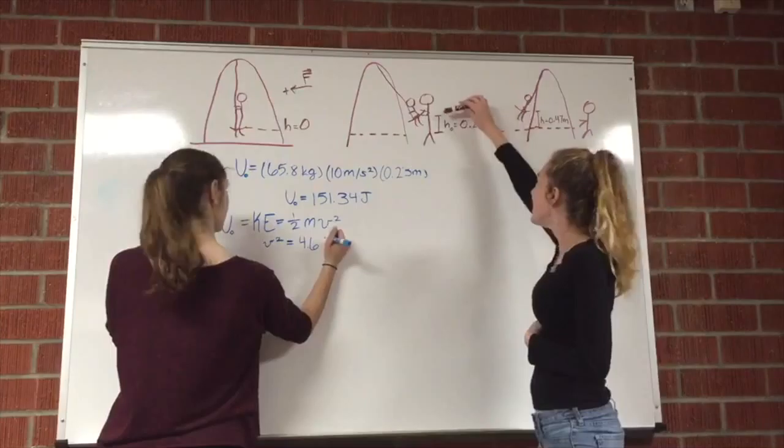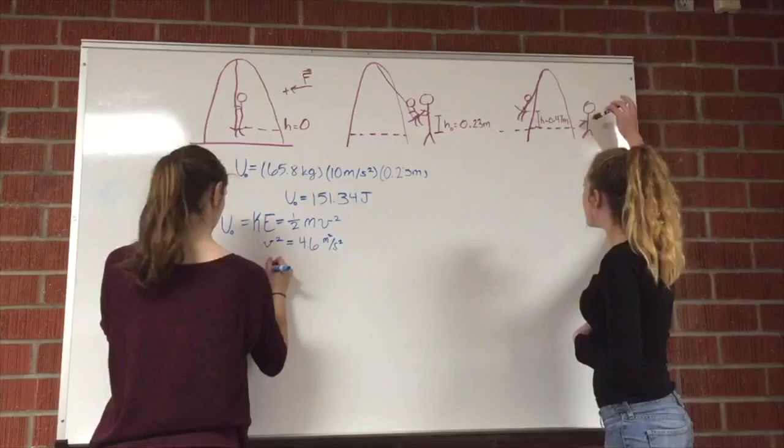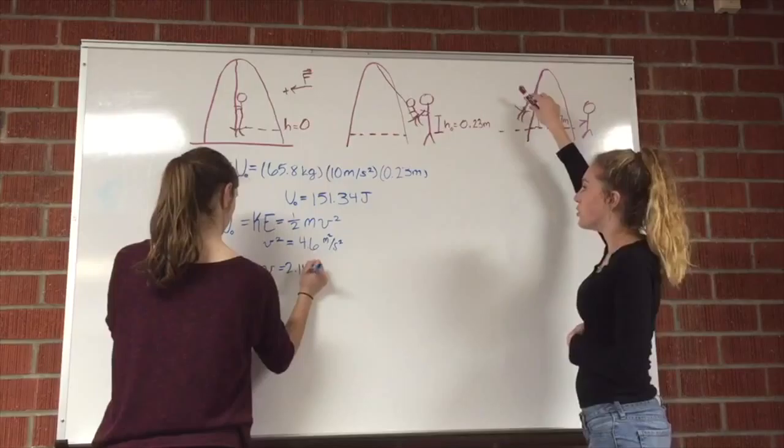plus the work that Jackie puts in by pushing her. So the initial potential energy plus the work equals the final potential energy.